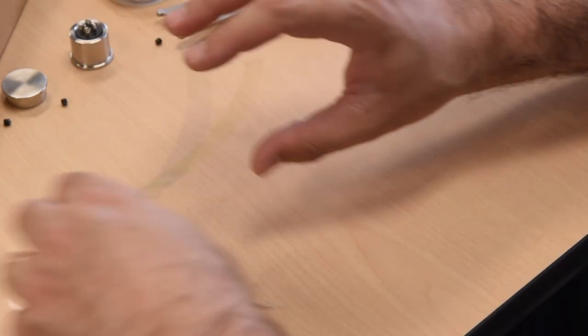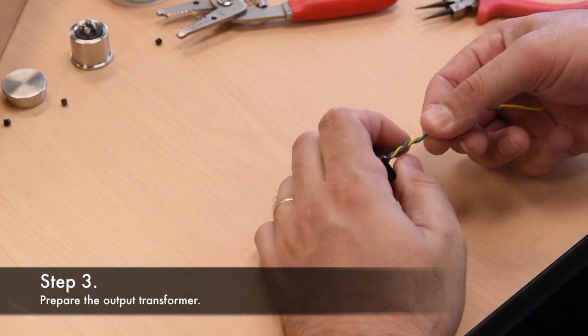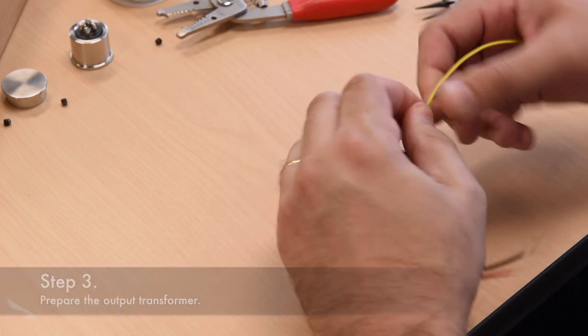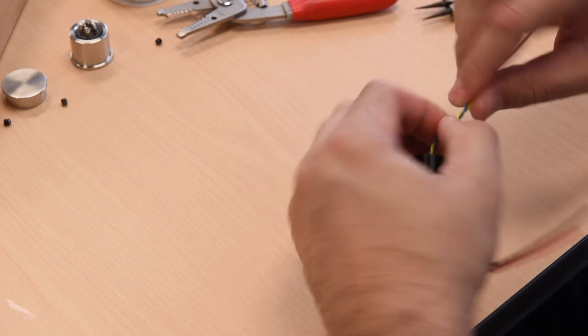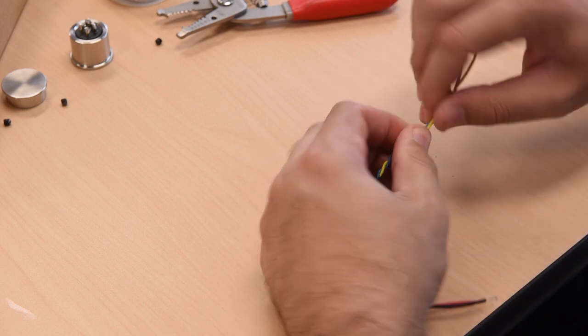Twisting the output transformer leads also helps to reduce electromagnetic interference, crosstalk, and radio frequency interference. These measures will ensure that your ribbon microphone has clean signal with the least amount of noise possible.